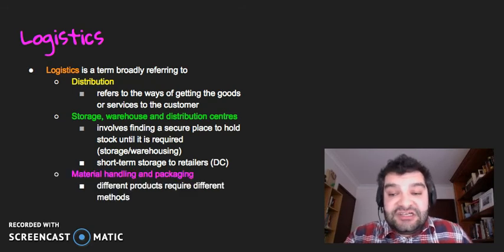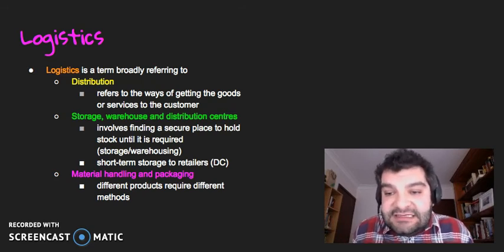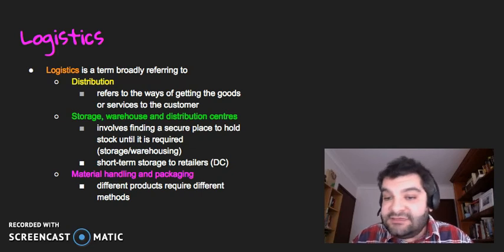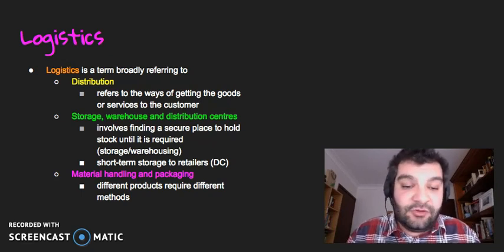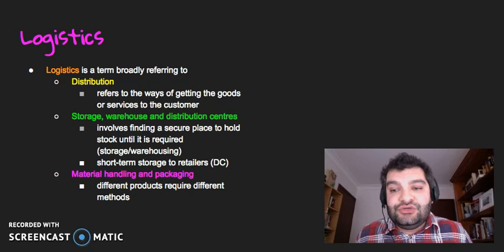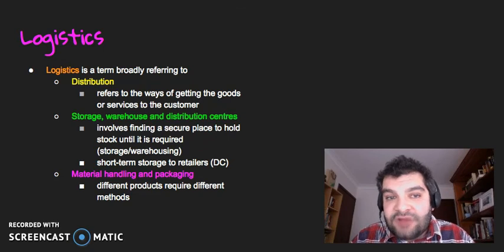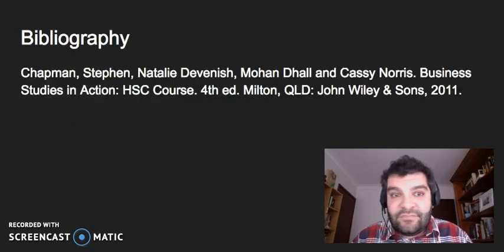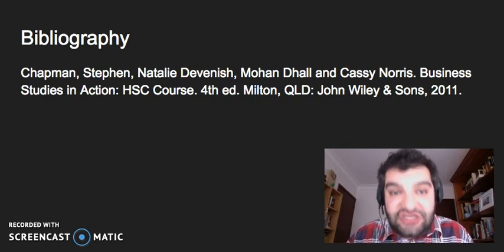Logistics also looks at material handling and packaging. Different products require different methods — a business handling, packaging, and delivering bricks is going to be operating in quite a different way than one that deals in eggs or glass. When it comes to supply chain management, a business needs to consider what they're making and what's the easiest and most efficient way of getting it to the customer. The next video is going to look at outsourcing. I hope this video was helpful when it comes to supply chain management. Thank you.